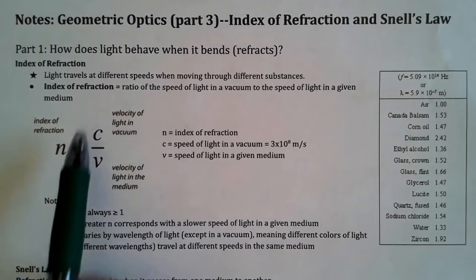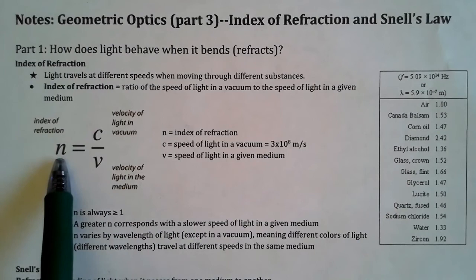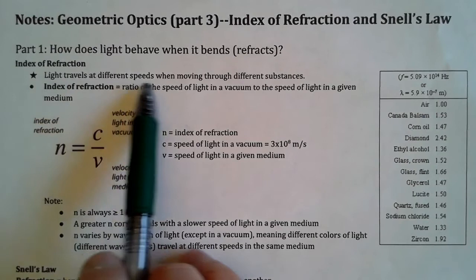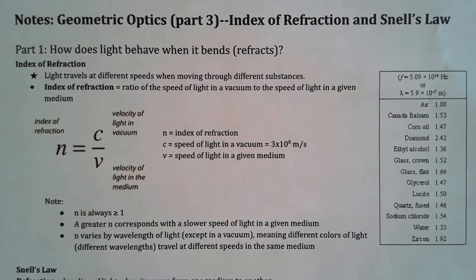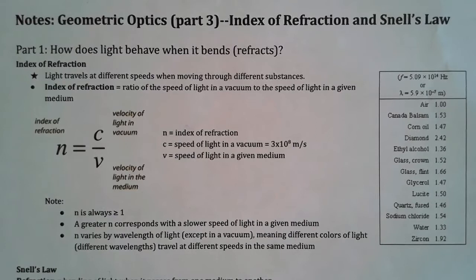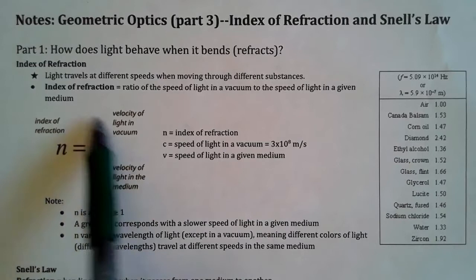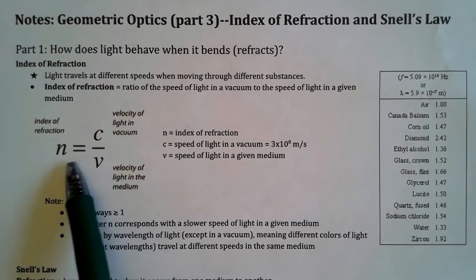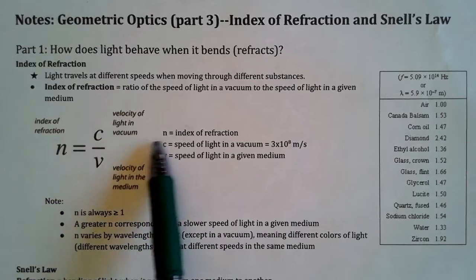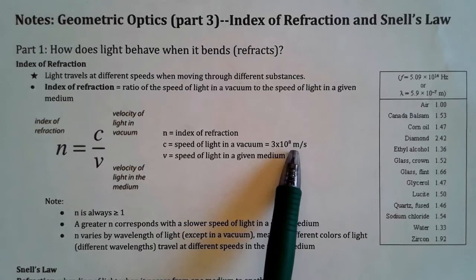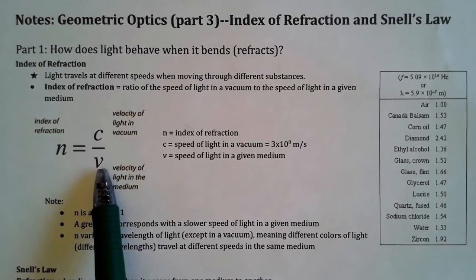To understand refraction, we need to understand the index of refraction. We use the symbol lowercase n for that. The key is that light travels at different speeds when going through different substances. The speed of light — three times ten to the eighth meters per second — is the speed of light in a vacuum, and it's pretty close to the speed of light in air as well. But when light is going through other substances, it's going to slow down. Here's the equation: n equals c over v. This equation is on the equation sheet — make sure you know where to find it. n is the index of refraction, c is the speed of light in a vacuum, and v is the speed of light in the material.